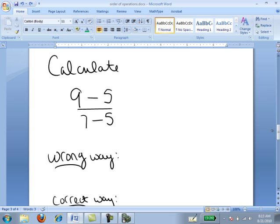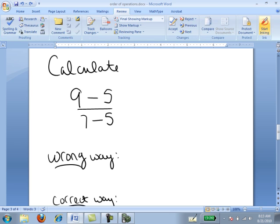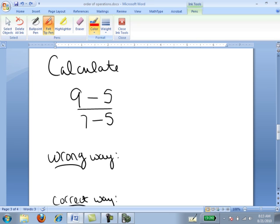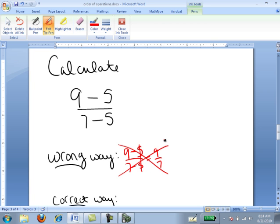Lastly, another very common error I see students make is that when they're calculating a fraction like this, they think that you can just cancel the 5s. So (9 - 5) / (7 - 5), students think, oh, well, there's 5 over 5, I'll just cancel that, and so it's 9/7. No, no, no, no, no, no.